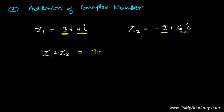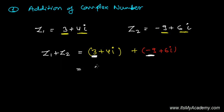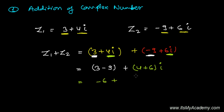So we have Z1 = 3 plus 4i and Z2 = minus 9 plus 6i. The real parts and imaginary parts must be added separately. So the real part added with the real part is 3 minus 9, and the imaginary part added with the imaginary part is 4 plus 6i. So 3 minus 9 gives minus 6, and 4 plus 6 gives 10i.